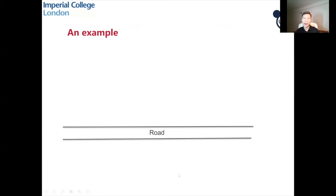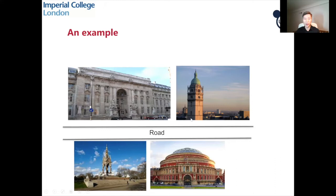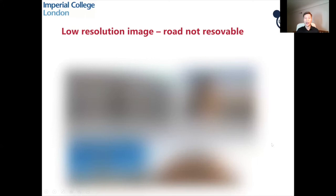Here is another example. Imagine I'm drawing a road and I'm interested in imaging this road to understand the transport infrastructure of a city. I might have a camera high up in the sky, but if my camera is really far away, the image could be very blurred — the resolution might not be enough. I would get a very low resolution image, and the road is not resolvable. So how can I get a super-resolution image of this road?